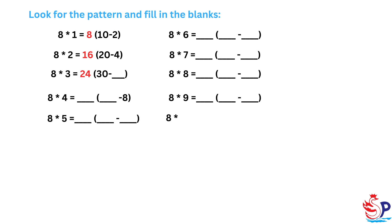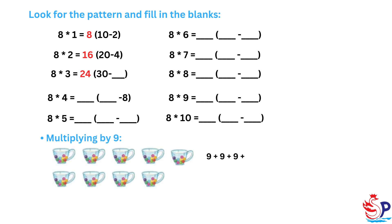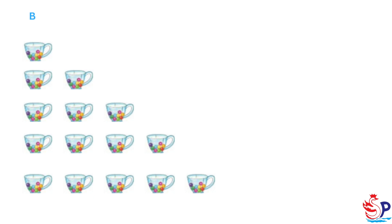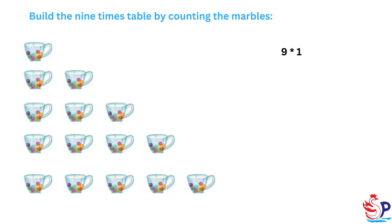9 plus 9 plus 9 plus 9 plus 9 plus 9 plus 9 plus 9 plus 9 plus 9 equals; 9 groups of 9 are; 9 times 9 equals. Build the 9 times table by counting the marbles: 9×1=9.